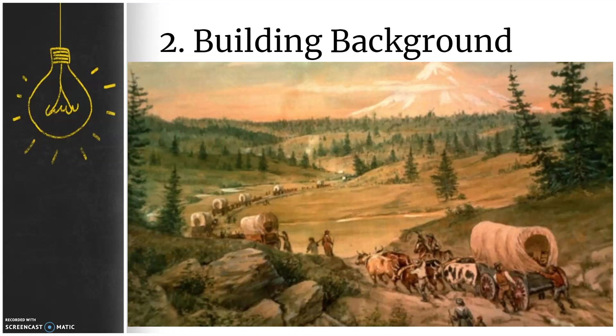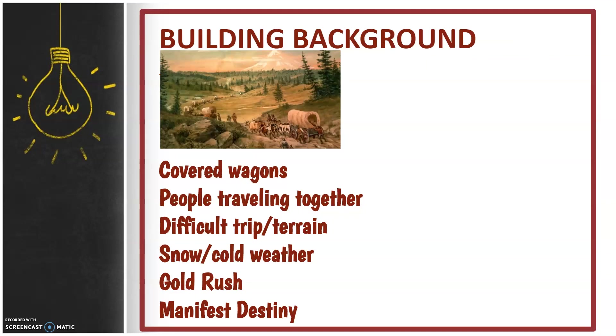Students generally describe the covered wagons, people traveling together, how it looks like a difficult trip based on the terrain and the weather. In this lesson, students are also asked what they already know about westward expansion. Typical responses include people came to the west for property or for gold. Some tie in what they know about manifest destiny and how settlers wanted to develop land from coast to coast. As the teacher records this information, students should also copy it down on their own graphic organizer.